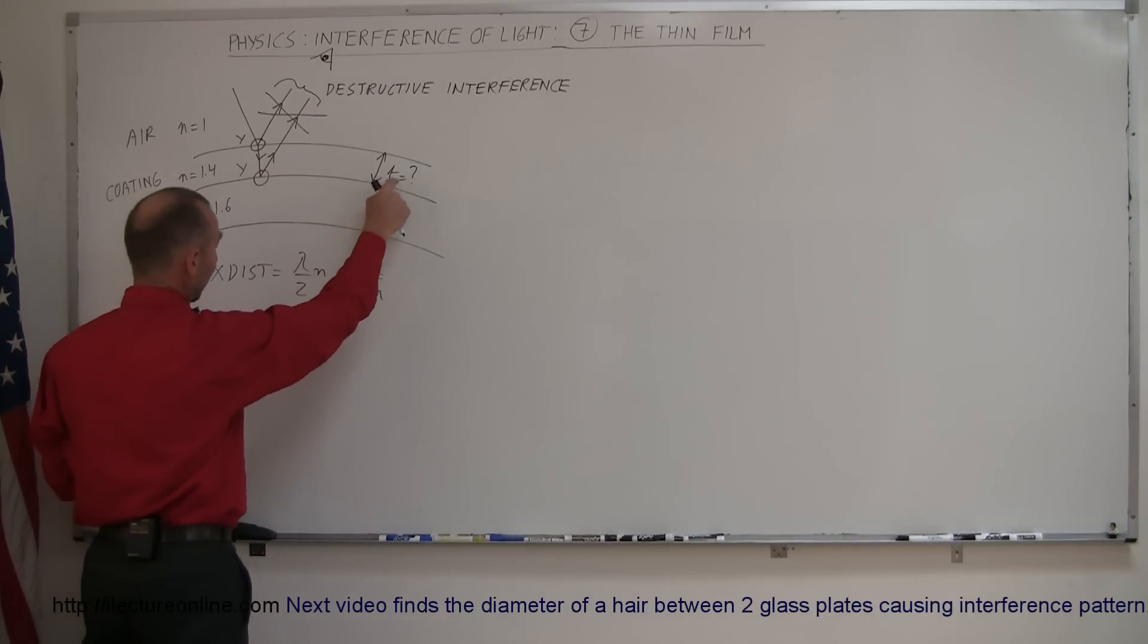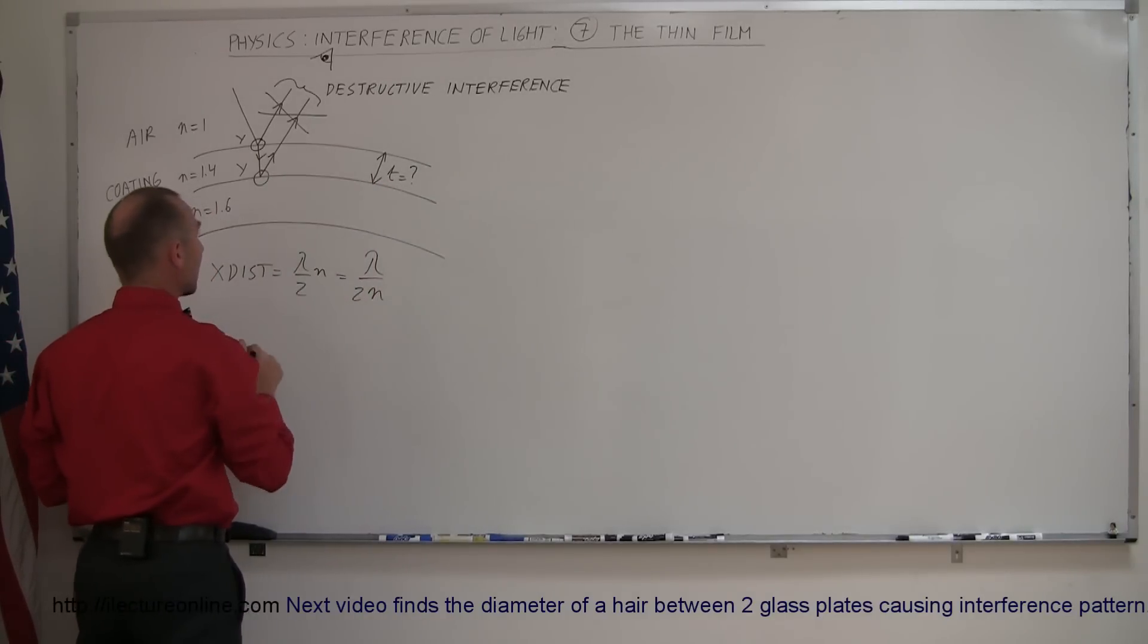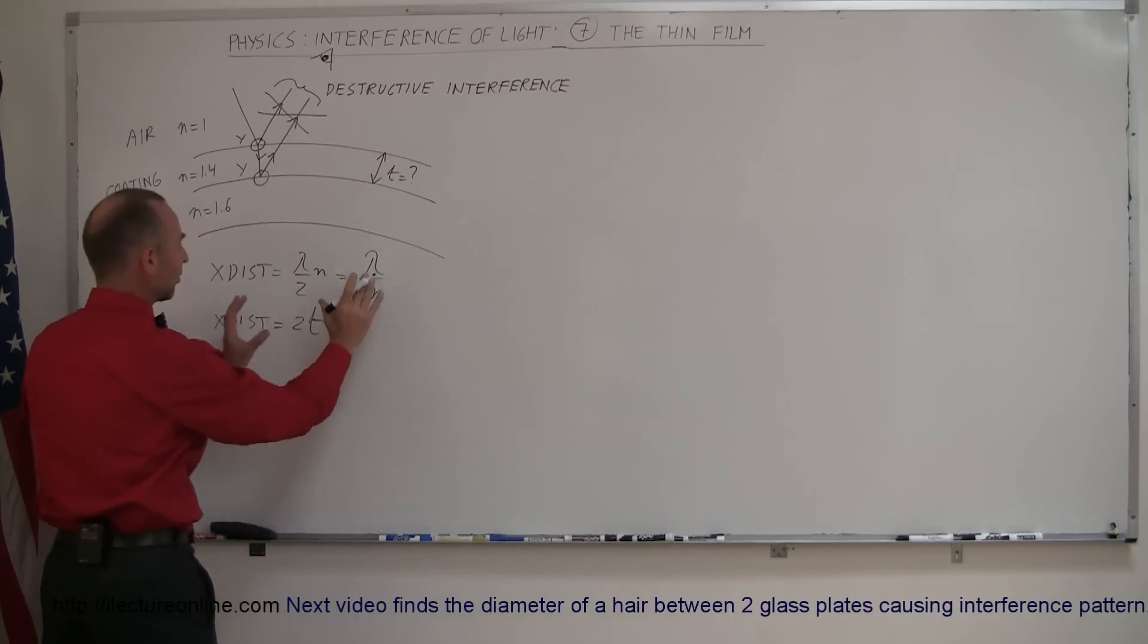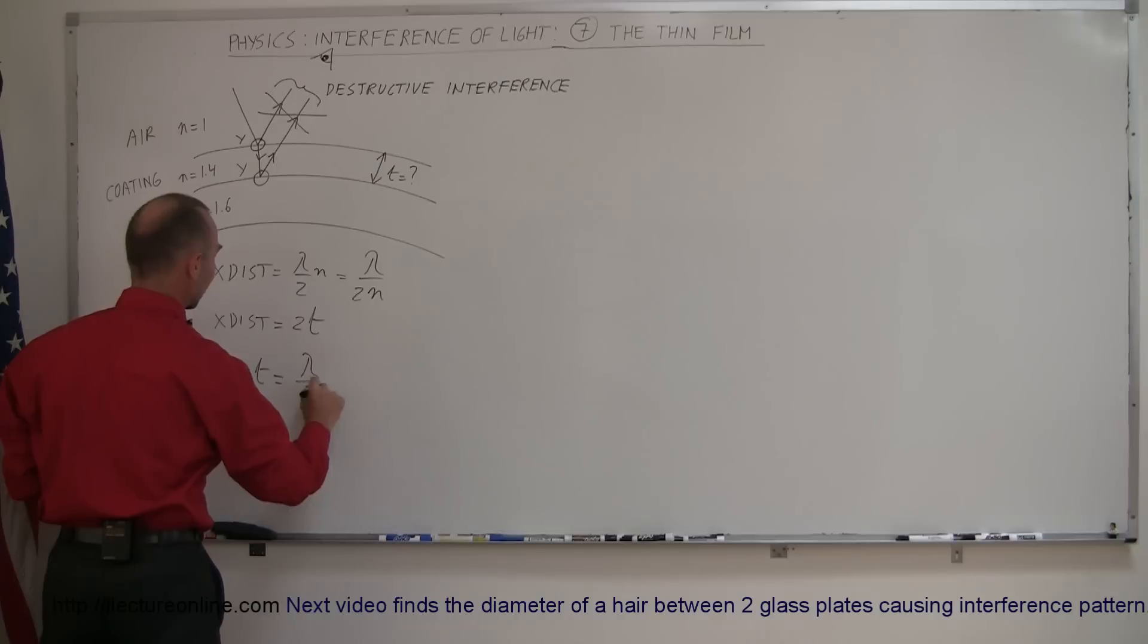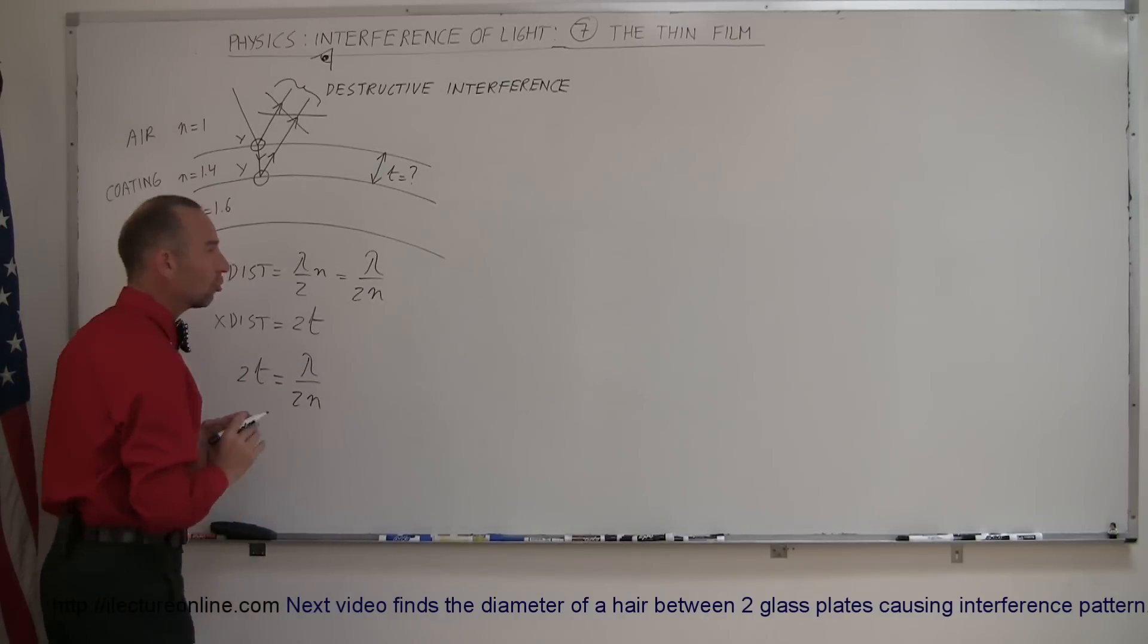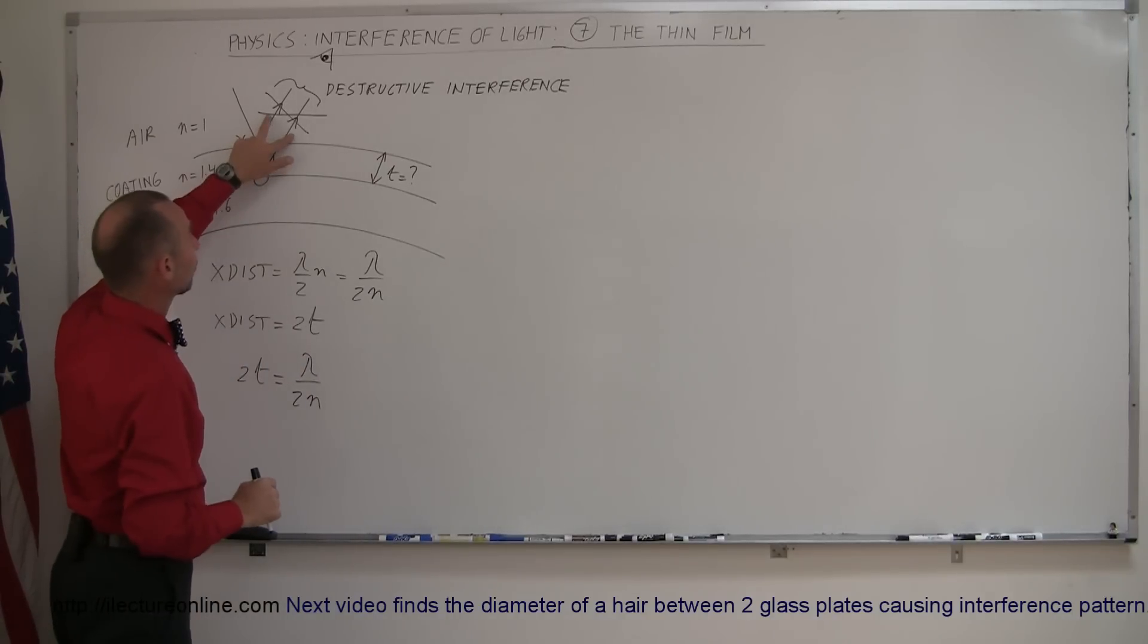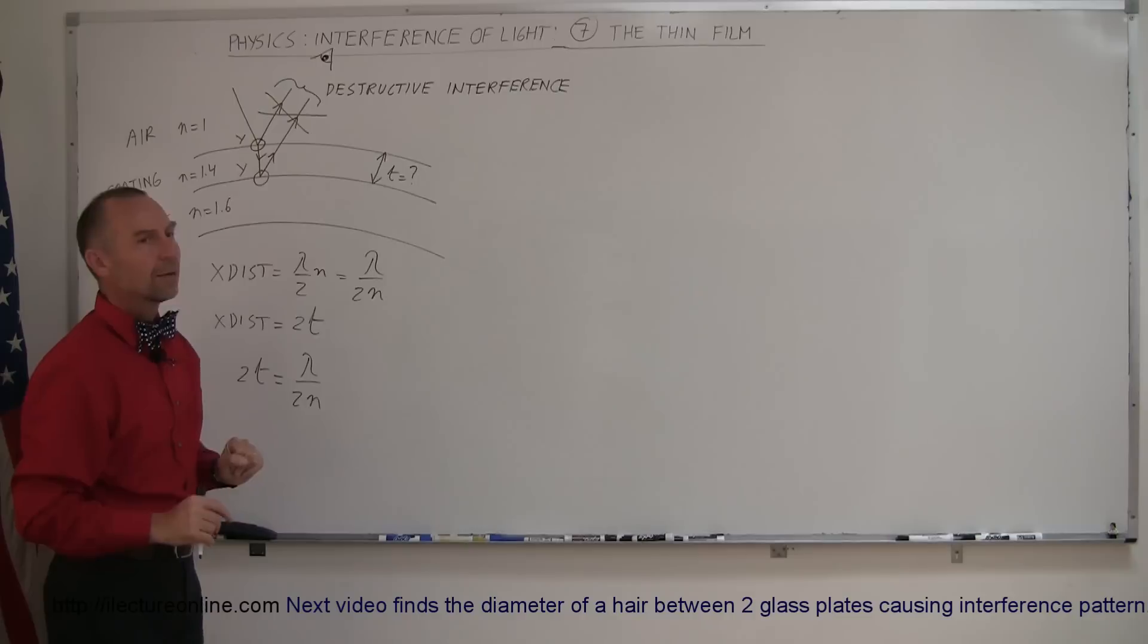Also, we know that the extra distance traveled must be twice the thickness of the coating. So now we set those two equal to each other, and we say that twice the thickness must equal lambda divided by 2n. And if that condition is true, we'll have destructive interference and no light will be reflected.